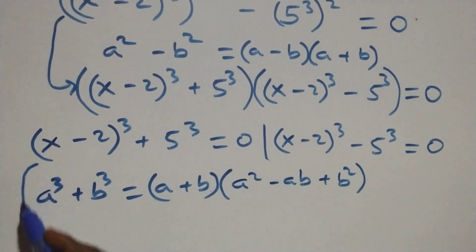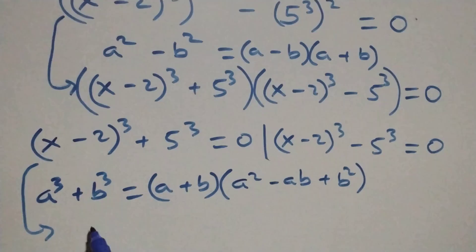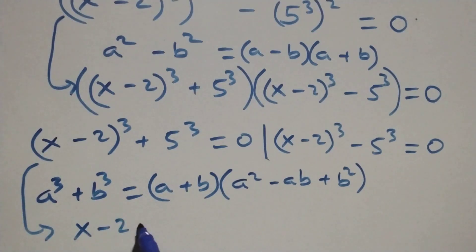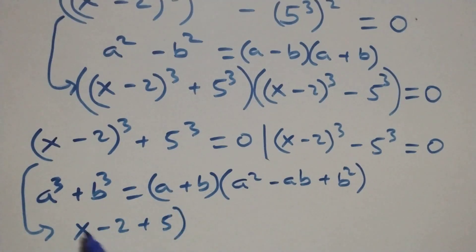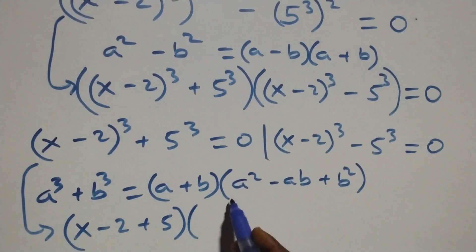So what we have becomes (x minus 2 plus 5) times an open bracket containing the expanded terms.